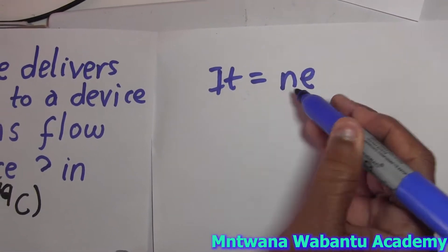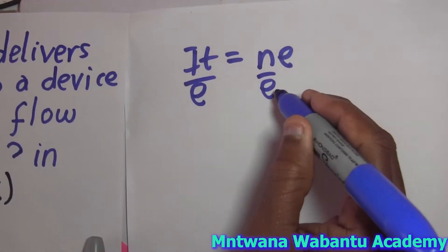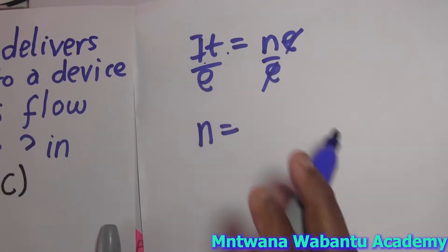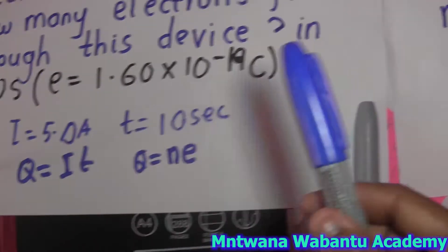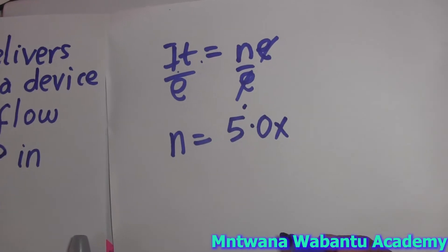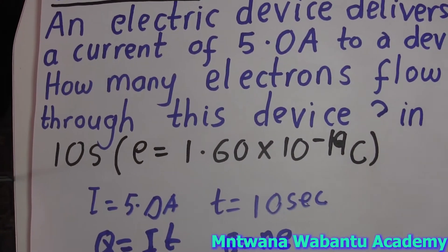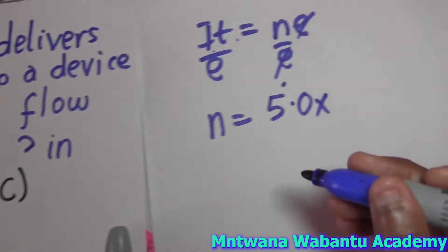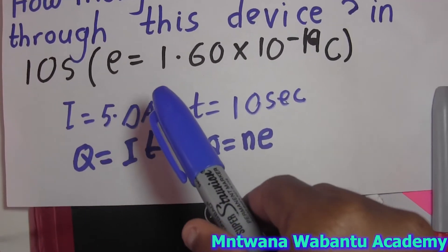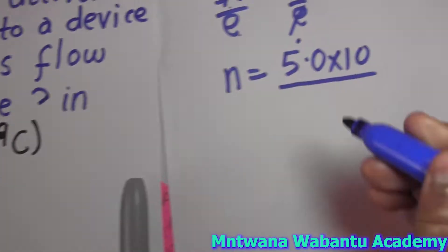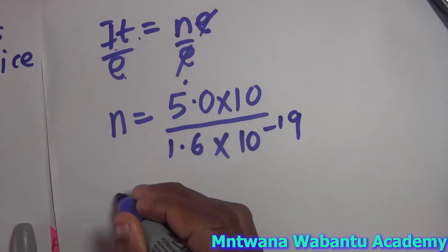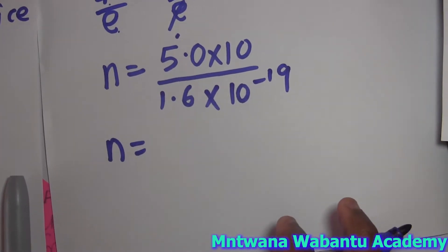So I'm looking for the number of electrons. I'm going to divide both sides by e — the electron charge — and those will cancel. So the number of electrons equals current times time divided by e. Our current equals 5.0 amperes, time equals 10 seconds, divided by one electron's charge, which is 1.6 times 10 to the power of negative 19.